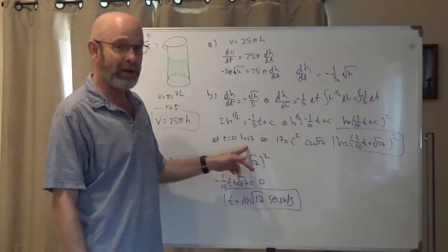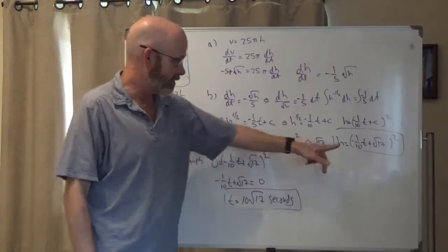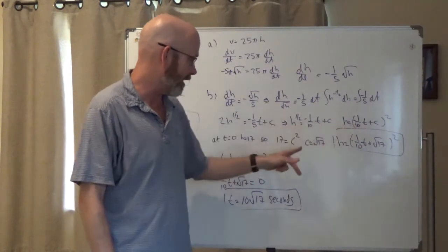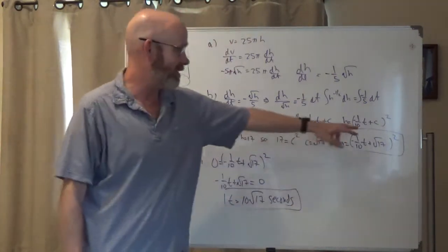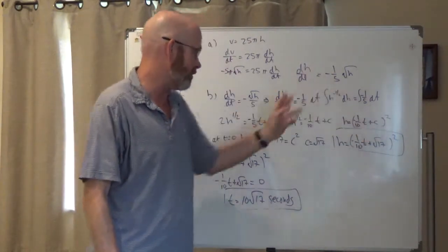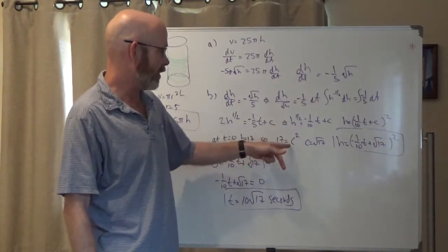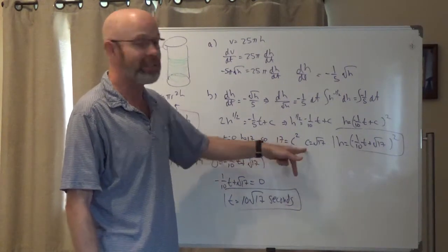I know that at t equals zero, h is 17. So 17, just solve that. Pretty straightforward. If c is zero, I'm sorry, if t is zero, that's just gone, the square root. You get c squared equals 17. So c is root 17.